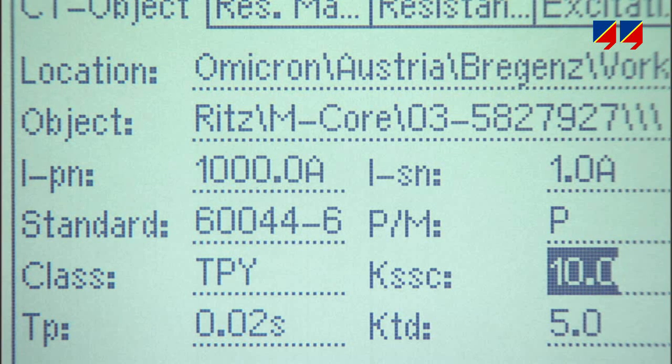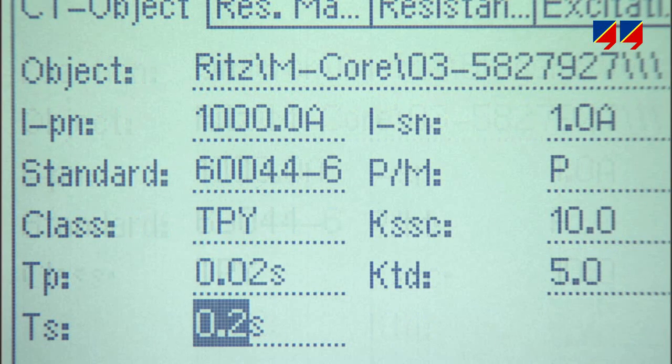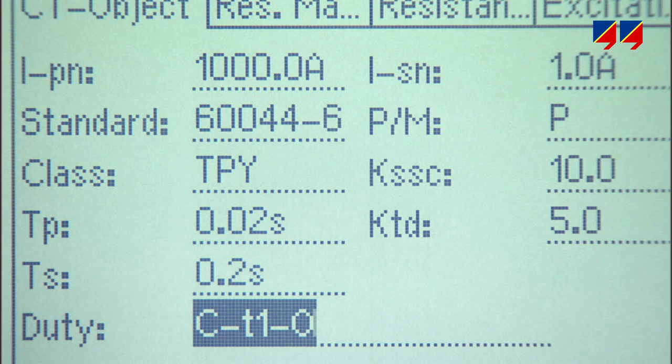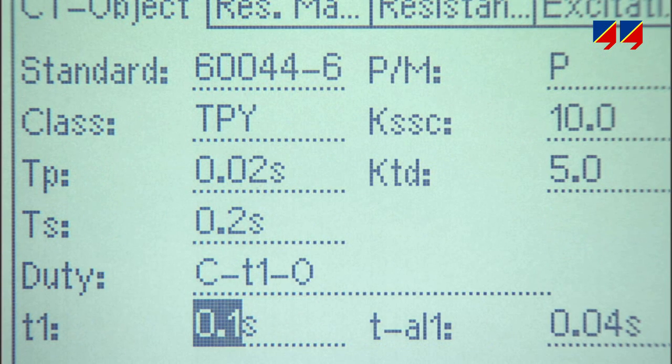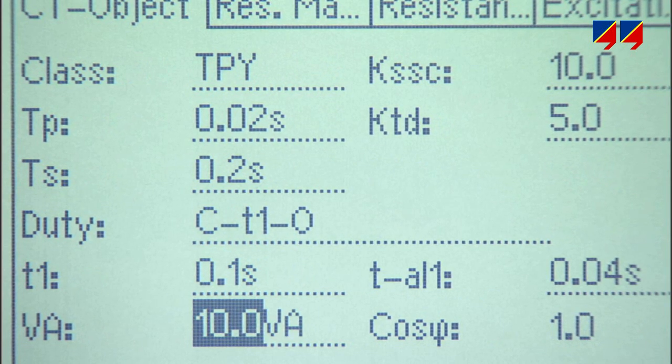When testing such a CT, specification data such as the rated symmetrical short circuit current behavior and the permissible time to accuracy limit can be entered into CT analyzer, which will determine its equivalent model and verify the parameters specified, as with any other CT.